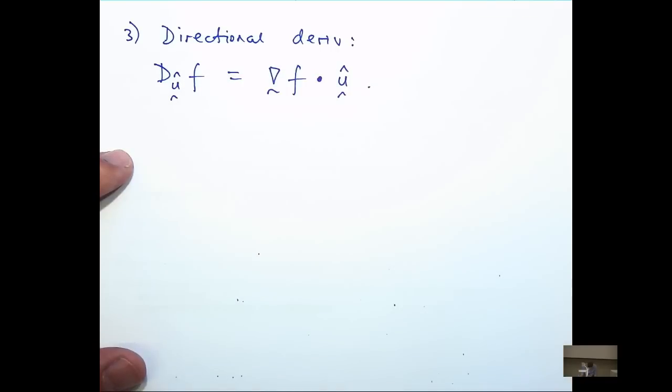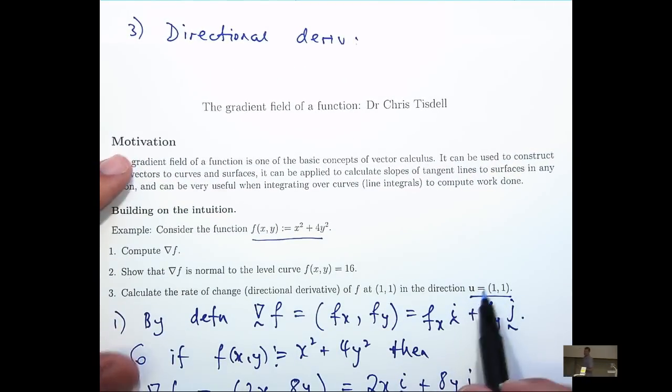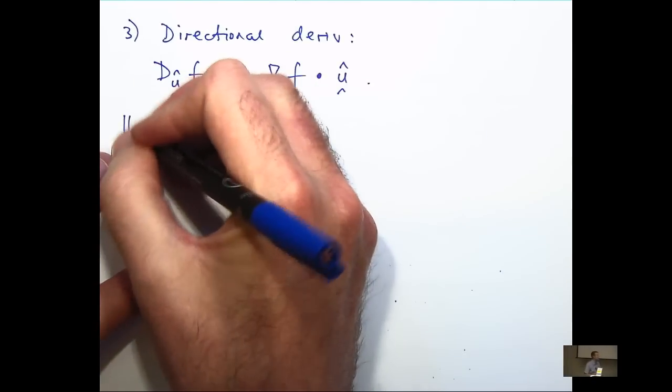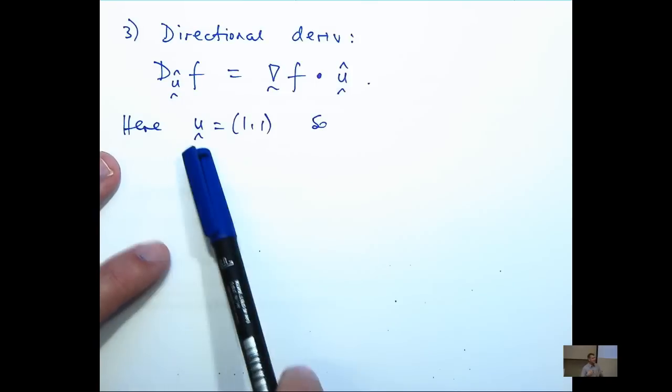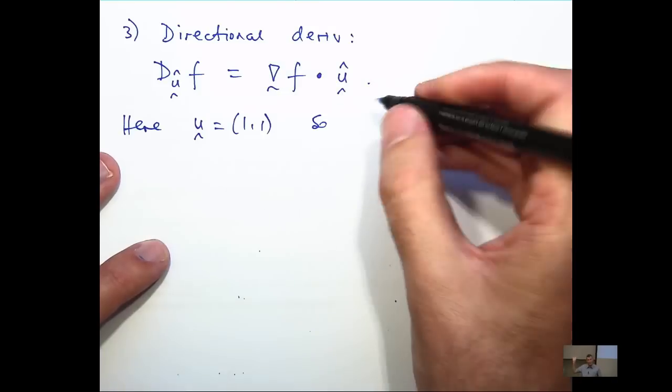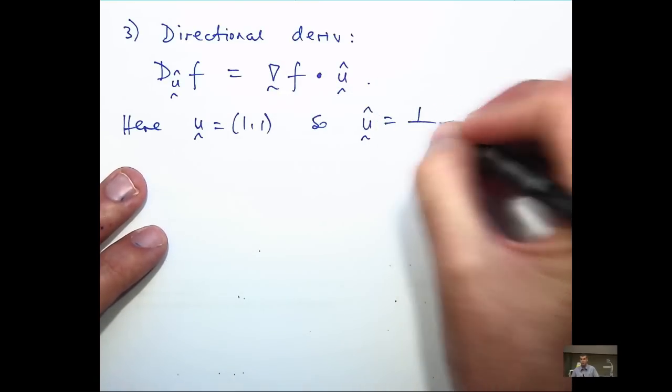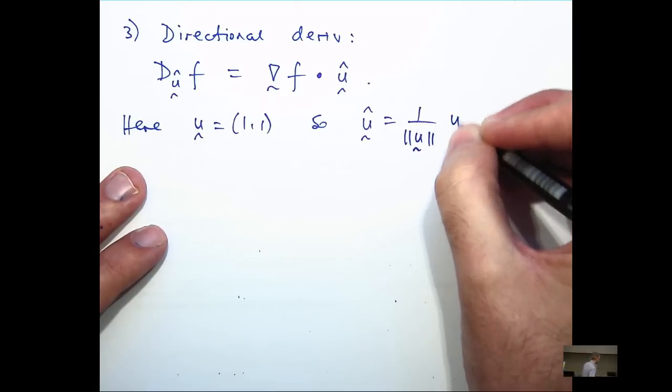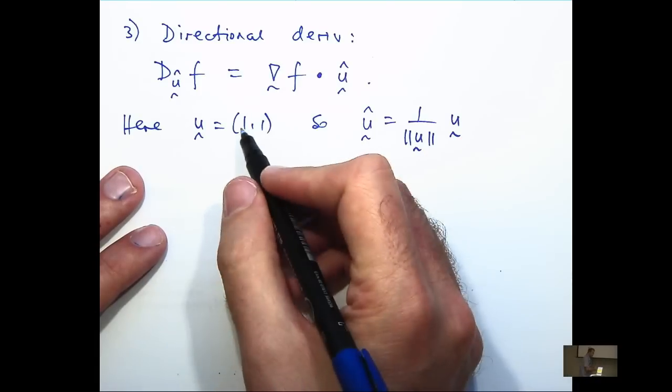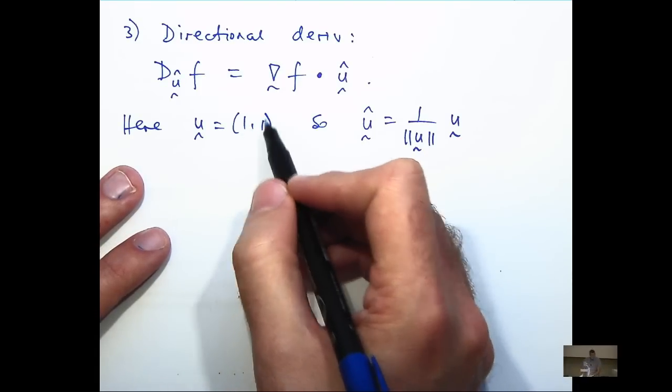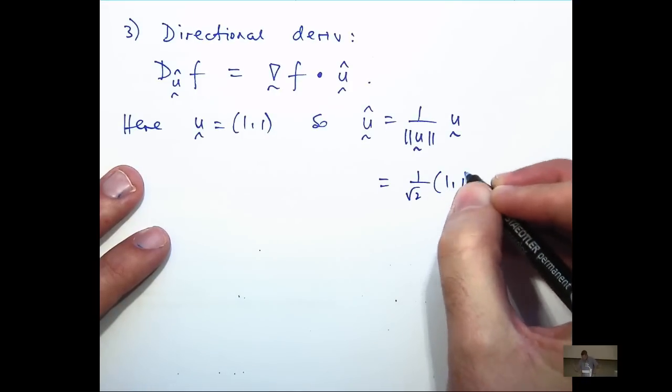For our particular example, this is our vector, our direction of interest. You notice that this isn't a unit vector. It doesn't have length 1. So let's use this and form a unit vector in the same direction. All we do is we take the magnitude and divide it into the original vector. So this vector has length root 2. You square the components, add them together, and take the square root. And this is our unit vector.